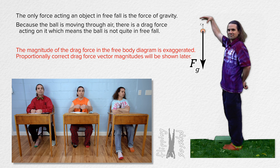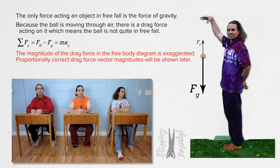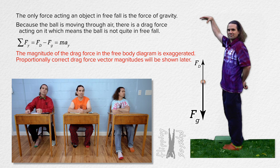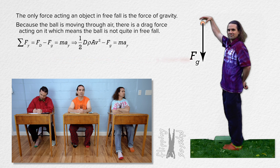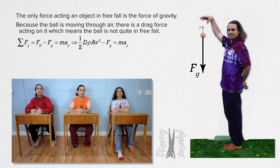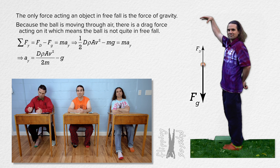The net force in the y-direction equals the force of drag minus the force of gravity, which also equals mass times acceleration in the y-direction. The equation for the force of drag is one-half times the drag coefficient times the density of the medium times the cross-sectional area times speed squared. The equation for the force of gravity is mass times acceleration due to gravity. Dividing by mass gives the acceleration in the y-direction of the ball.